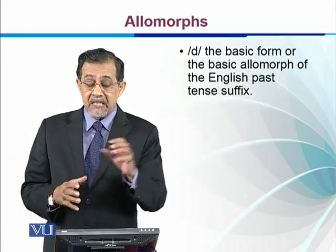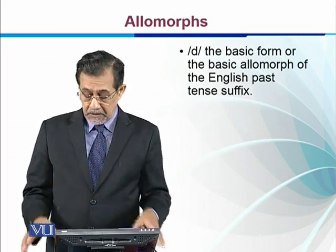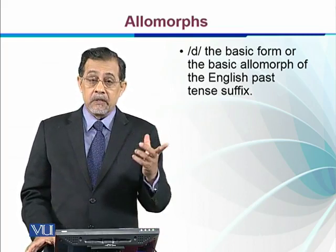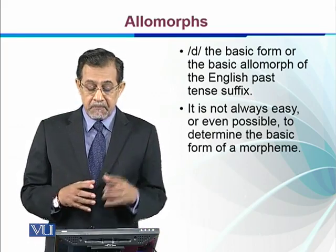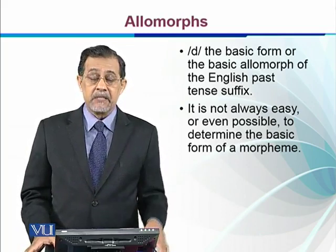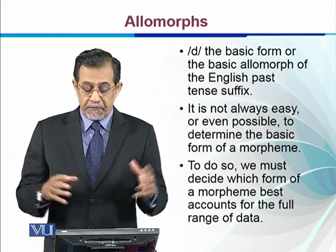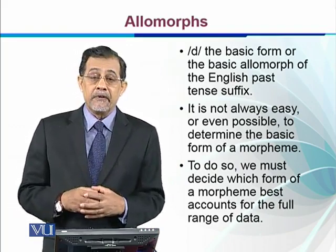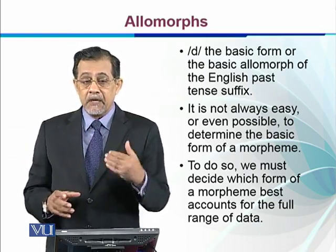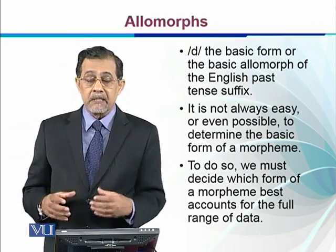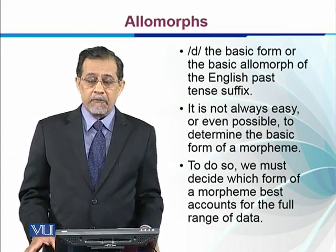However, /d/ is the basic form, or the basic allomorph, of the English past tense suffix — not /t/ or /n/. It is not always easy or even possible to determine the basic form of a morpheme; however, it is a difficult phenomenon. To do so, we must decide which form of a morpheme best accounts for the full range of data. Before saying whether /t/ or /d/ is the basic form, we have to look at the data and make a thorough search to determine which is the basic morpheme.